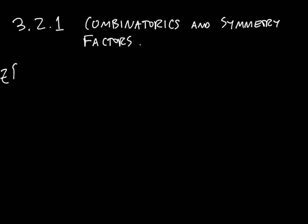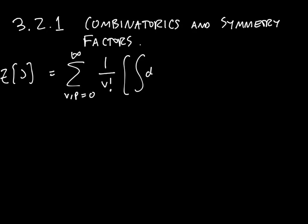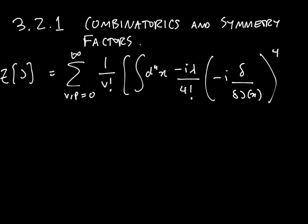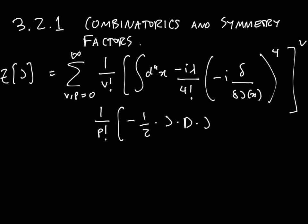I want to remind you that the general expansion of the generating functional involved a double exponential. If I expand all of those out, then what I get is a sum that looks like this: I sum over all possible numbers of vertices. There are four functional derivatives coming out of each vertex, each raised to the V power. Furthermore, there is a sum over possible numbers of propagators from the free generating functional, raised to the power of P.